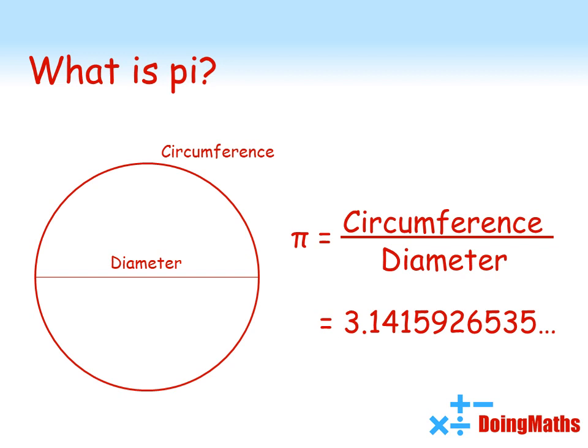We would get the same number for pi regardless of what size the circle is. You could have a 1p coin, you could have the center circle of a football pitch, you could have the millennium dome. If you took the circumference divided by the diameter, you would still get the same value of pi.